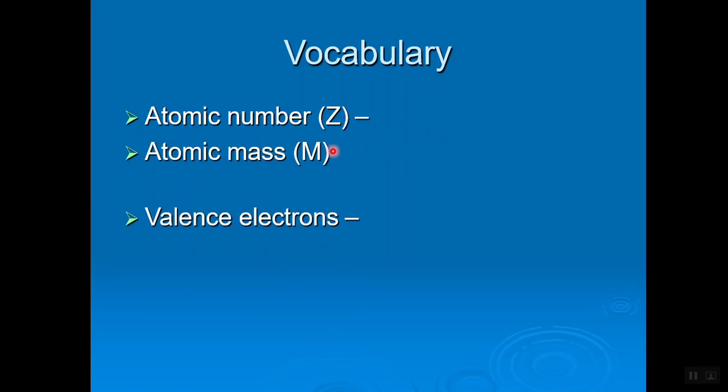Valence electrons. Valence electrons are the electrons in the outermost energy level of an atom. The valence electrons are the electrons in the outermost energy level of an atom.